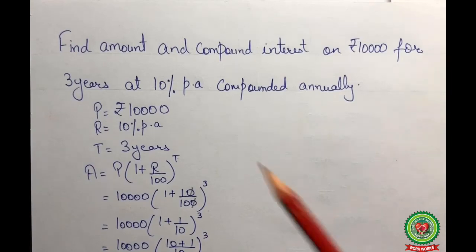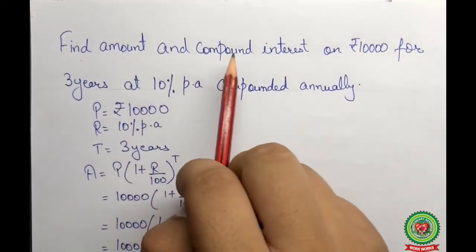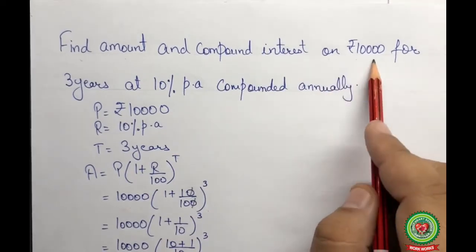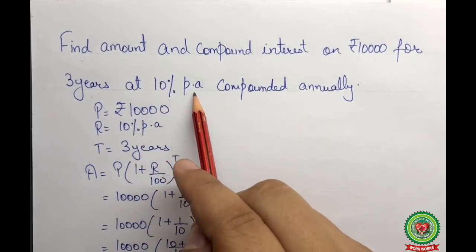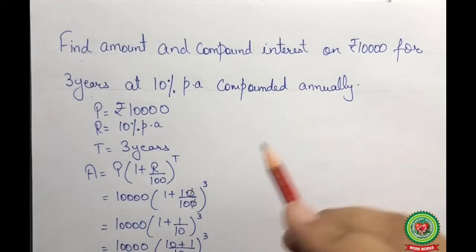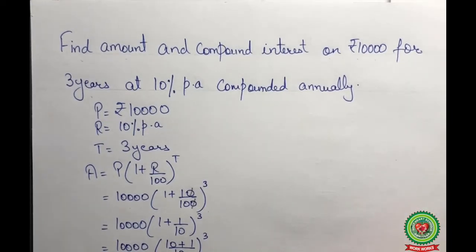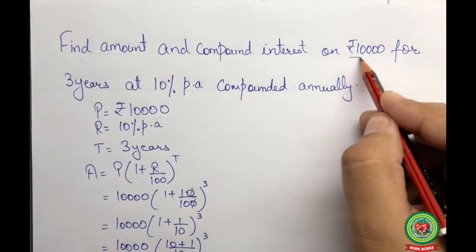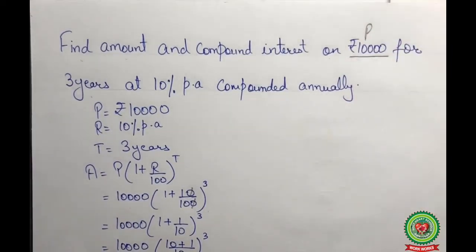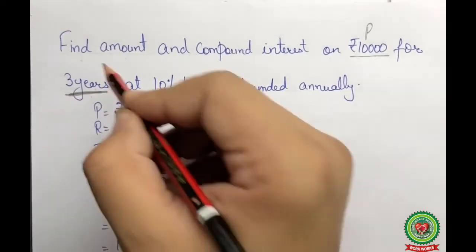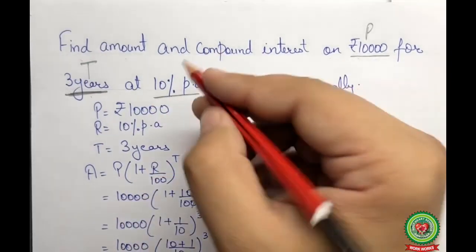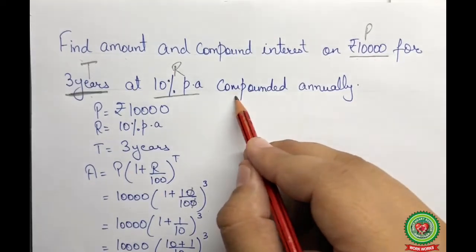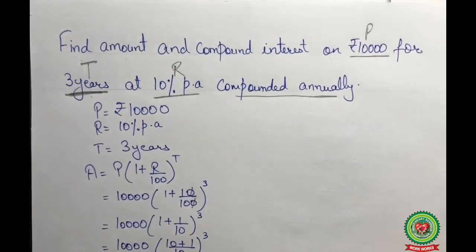Now let us discuss an example for finding amount and compound interest. Find the amount and compound interest on rupees 10,000 for three years at the rate of 10 percent per annum, compounded annually. From this example, we identify the given values: principal P = 10,000, time t = 3 years, rate r = 10 percent per annum, and it is compounded annually.